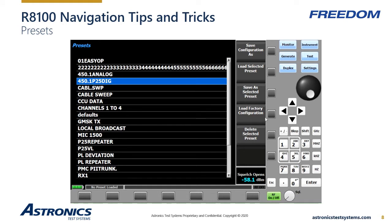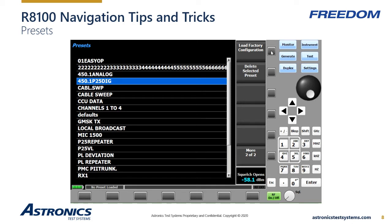If you plug in a USB drive to the side of the unit, the import and export presets options will appear. This allows you to share presets between test equipment or store them on your computer as backup. You can only edit the presets on the test equipment. There is a preset indicator by the battery window which shows which preset is in use. The load factory configuration button is a very important function under presets — this selection resets all parameters to factory default, similar to Control-Alt-Delete on your computer.